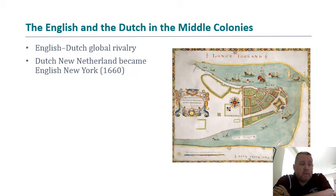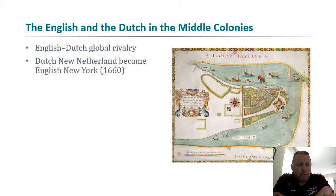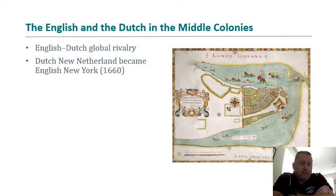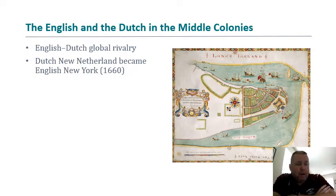The middle colonies are generally New York, New Jersey, Delaware, and Pennsylvania. New York City was initially New Amsterdam — the Dutch had settled it. Even today there are still some Dutch remnants in New York City. The Dutch's best foothold into what is the United States today was New Amsterdam. The French got down the St. Lawrence and into what is central United States today, but New Amsterdam was the Dutch's best foothold.